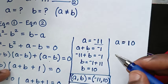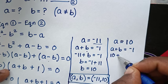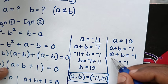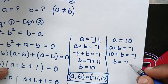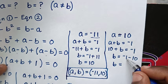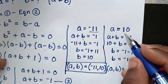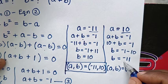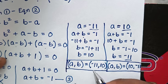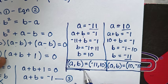For the second solution, we use equation 3 again: a plus b equals negative 1. Substituting a equals 10 gives 10 plus b equals negative 1, so b equals negative 1 minus 10, which is negative 11. Therefore the second solution pair (a, b) is (10, negative 11). So these are the two solutions to this problem.